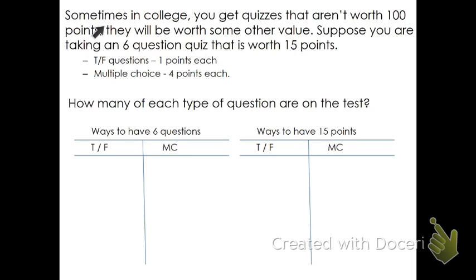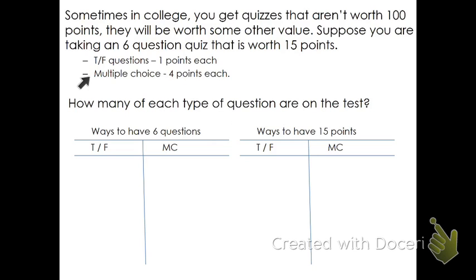Here's our first example. Sometimes in college you get quizzes that aren't worth 100 points. Suppose you're taking a six-question quiz worth 15 points altogether, made up of true-false questions and multiple-choice questions. True-false questions are one point each and multiple-choice questions are four points each. The question is: how many of each type are there? There are really two criteria — the total number of questions has to be six, and it has to be worth 15 points.